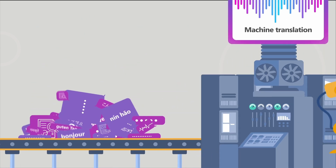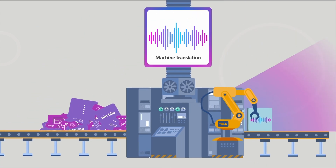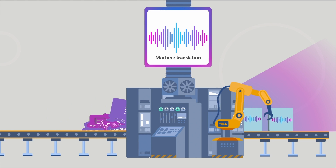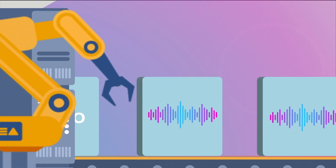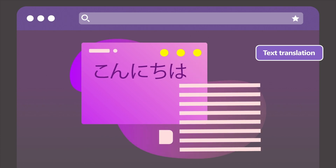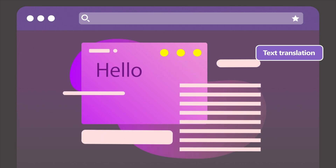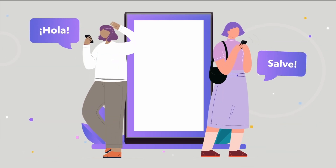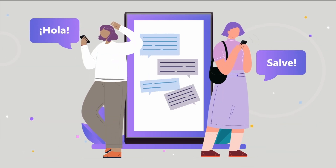Machine translation systems convert text or speech content from one language to another using text and speech translations. Text translations can translate web and app content into new languages, while speech translation enables communication with individuals who are speaking different languages.